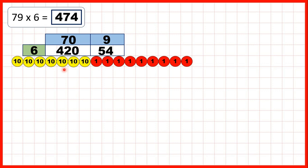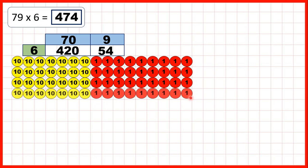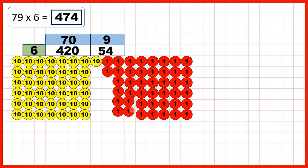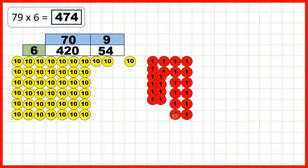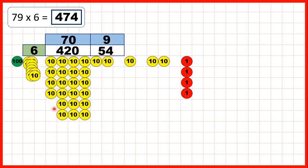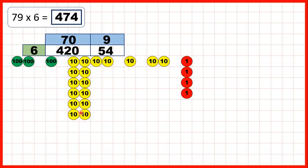Then we had 79 times 6. We can show 79 as 7 tens and 9 ones. We're multiplying by 6, so we can show 79 six times. So now we can regroup 10 ones to make 1 ten, and we can regroup 10 tens to make 100. And when we do that you can see that we now have 4 hundreds, 7 tens and 4 ones. So that's 474.